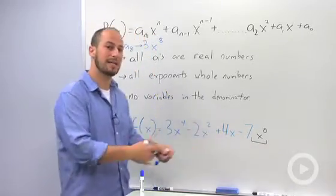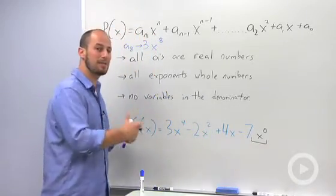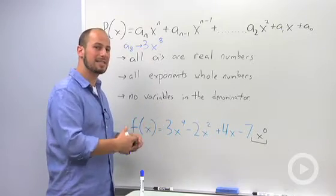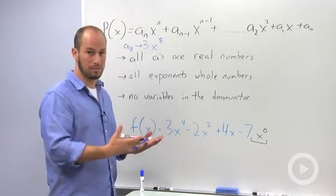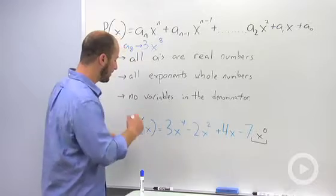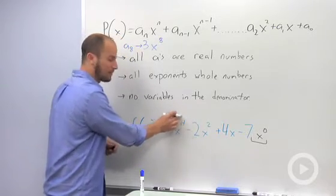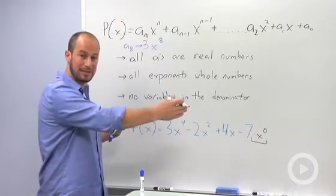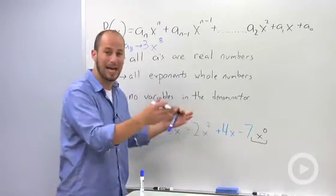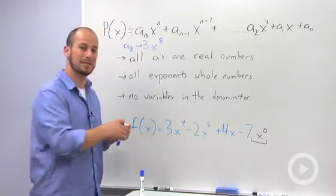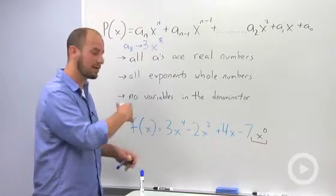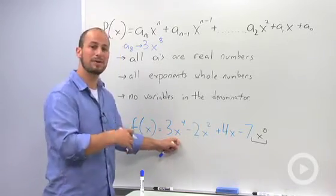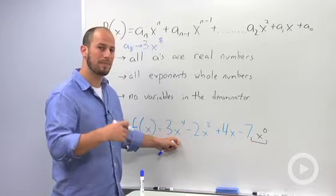So each individual term has a degree, but in addition, the polynomial has a degree as well. And that is just going to be the degree of the highest term. So this polynomial right here has a degree of 4. A common mistake is people want to add up all the degrees. So this is a degree of this, this, and this. Add them all together. It's not that complicated. Just look at the term of highest power. In this case, it's 4. That's our degree.